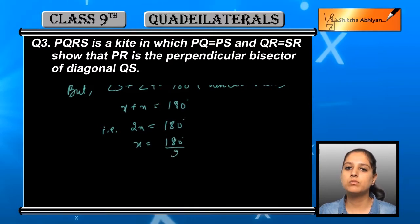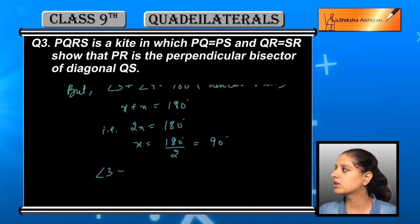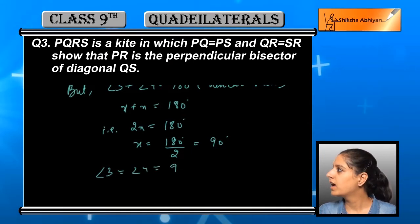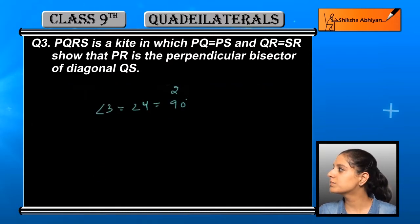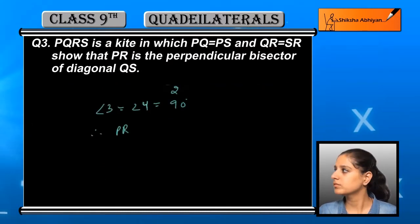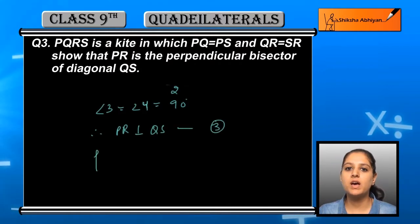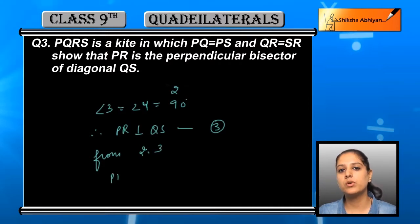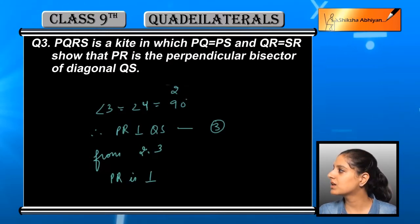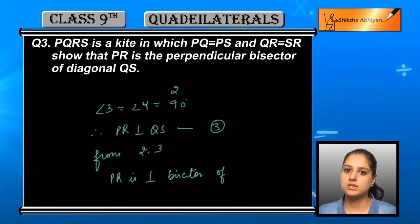So first we proved that PR divides diagonal QS into equal parts, and now we have proved that angle 3 and angle 4 are both 90 degrees. This means PR is perpendicular to QS — this is equation number 3. Equation 2 states PR is the bisector of QS, and equation 3 states PR and QS are perpendicular. From these, we conclude that PR is the perpendicular bisector of QS. Hence proved.